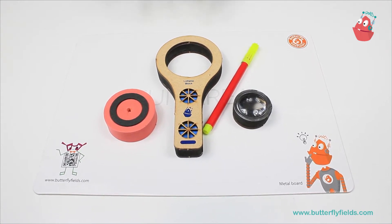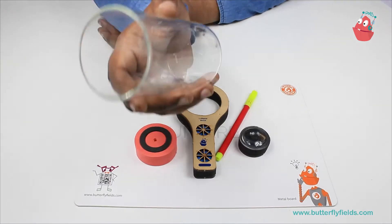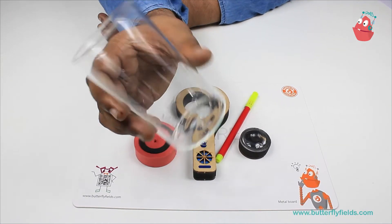For this experiment, you need the lollipop block, the focus bit and the lens bit. We also need a clear glass and some water.